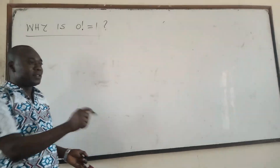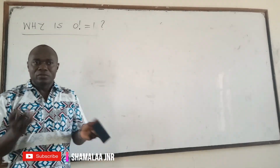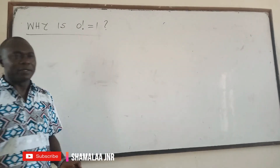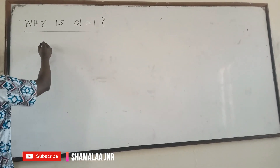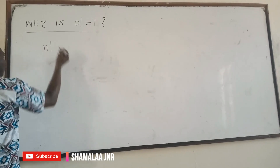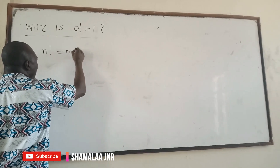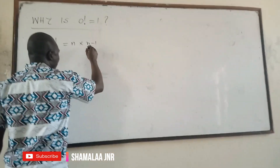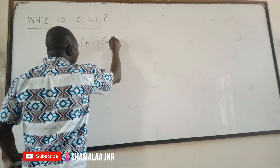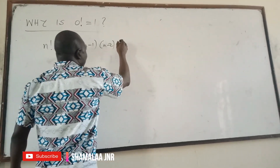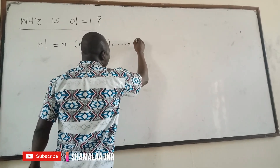If you take your calculator, this is 0 factorial, you get 1. Why is it 1? Why is it 1? 1 factorial is 1. So why is 0 factorial also 1? So you want to look at it. Look on the board. When you say n factorial, this is what you mean — you mean n times n minus 1, times n minus 2, and so on, times 2 times 1.